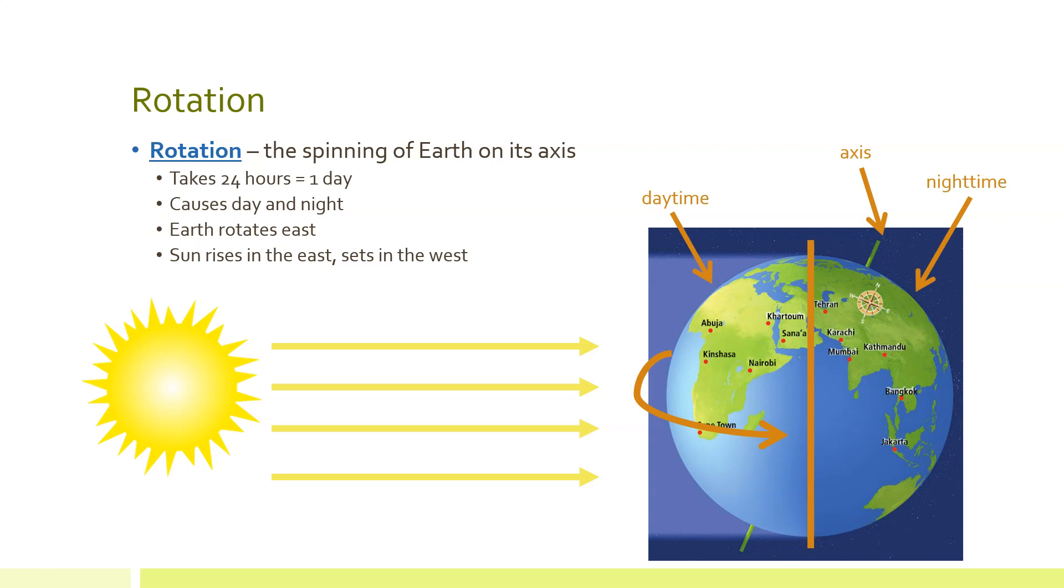As Earth rotates or spins, each part of the world faces the sun to have daytime and then faces away from the sun to have nighttime. It takes Earth about 24 hours to rotate once. As you know, each 24-hour cycle of day and night is called a day.